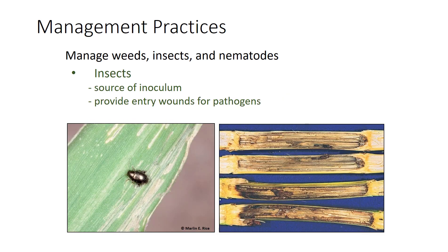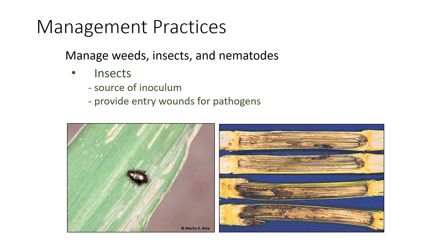Insects can be a source of inoculum. Insects can carry fungal pathogen spores on their bodies or may carry bacterial or virus pathogens inside them. For example, the corn flea beetle carries the Stewart's disease bacterium that affects corn. Feeding by the corn flea beetle wounds corn leaf tissues, allowing the bacterium carried by the beetle to enter the plant. Furthermore, some insects can cause wounds in plants that allow pathogens to enter the host plant. For example, corn stalk borers can wound corn, leading to stalk rot. Corn pith tissue damaged by stalk rots is discolored and can lead to lodging. Some soybean diseases, like sudden death syndrome and brown stem rot, are more severe when high numbers of soybean cyst nematodes are present. Thus, interactions can occur between two different types of pathogens that can result in greater disease severity.